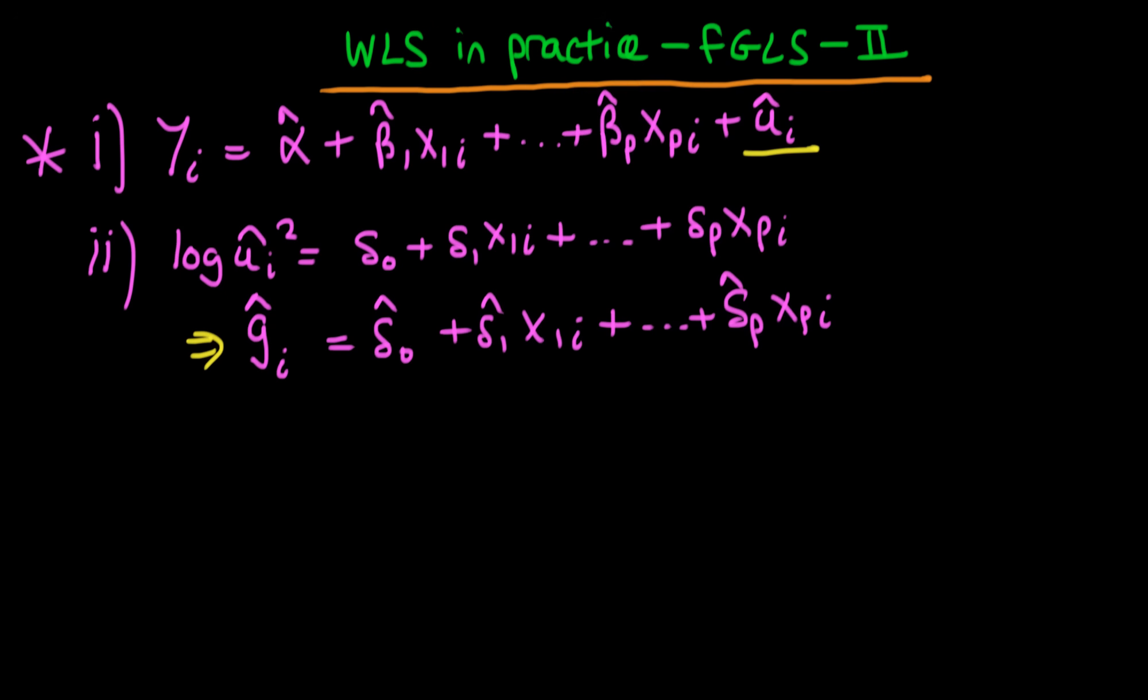So that's where we got up to last time. Now what we need to do is remember that we took the log of the model because we had an exponential model, and to get the variance on its own